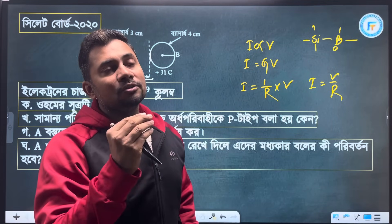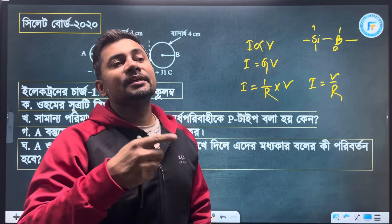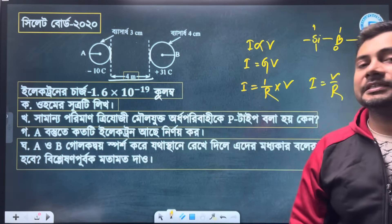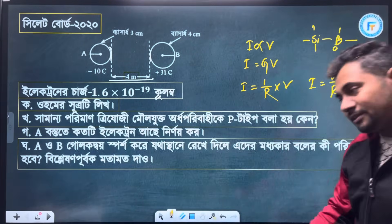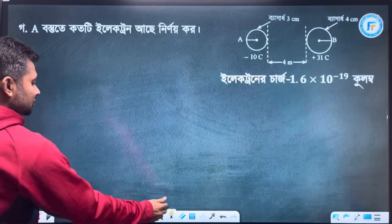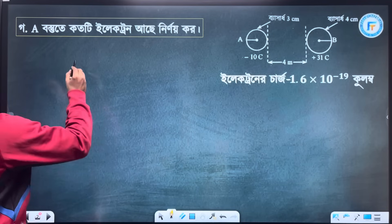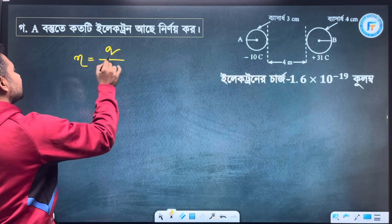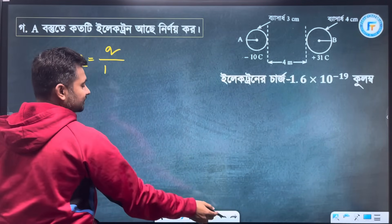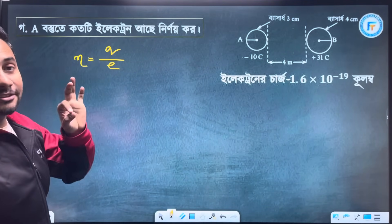When we do trivalent doping — 3-group element doping — then there are holes and there will be a P-type semiconductor. The number of electrons is the total number of charge divided by E.